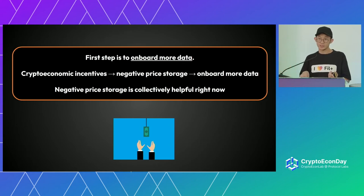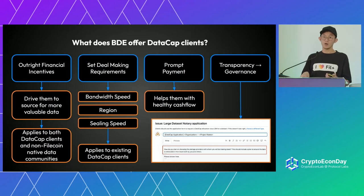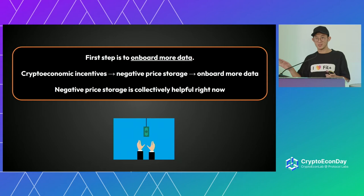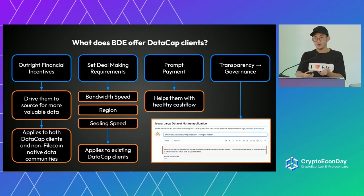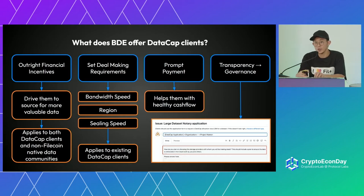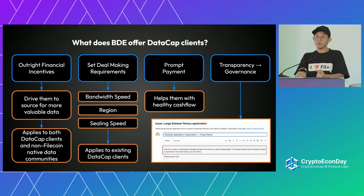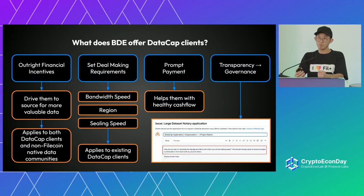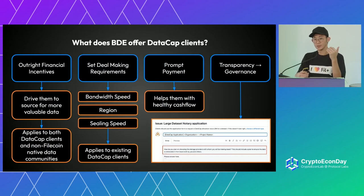Negative price storage is collectively helpful right now. There are many ways to onboard data and BDE is one of them. Why should data cap clients come to BDE? First, you get outright financial incentives — this applies to both data cap and non-data cap clients. What we really want to target is non-Filecoin-native data communities. You can also set efficient deal-making requirements such as bandwidth speed, specific region due to local laws, trust preferences, or faster retrieval speed.